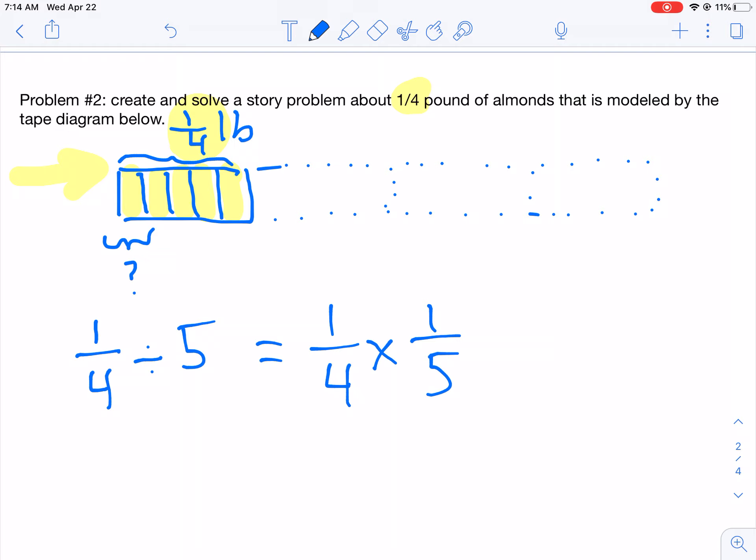That was a long story that just came out of the top of my head. Okay, so I have a quarter pound of almonds left and I want to cut that quarter pound into five equal baggies. So let's solve this.